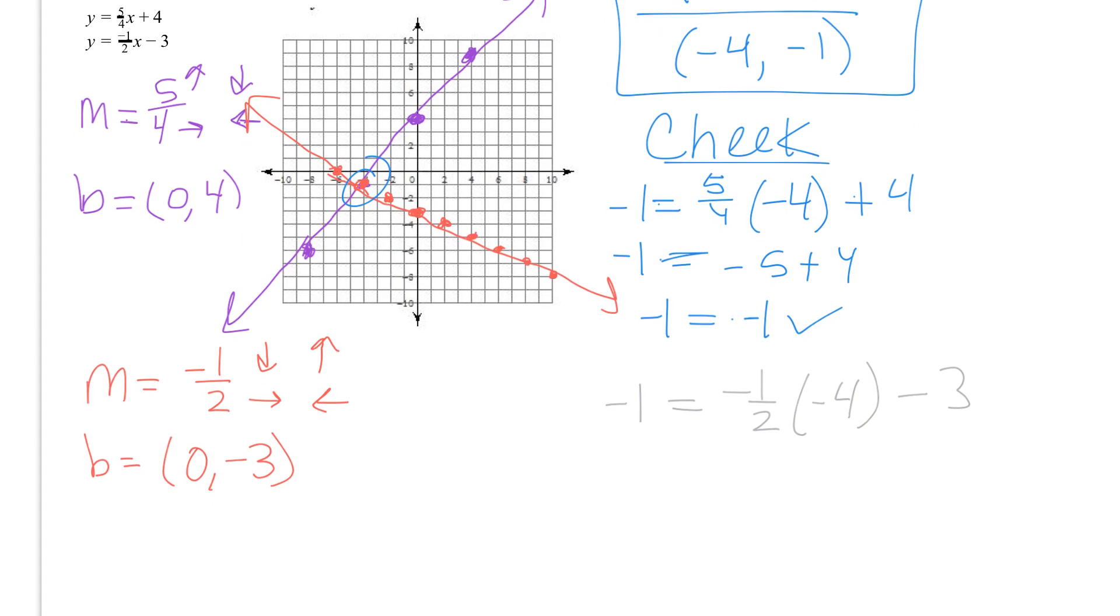Now again if you want to save yourself some time, you could just plug this right hand side into your calculator to make sure you get negative 1. Or again if you want to do it by hand you can. Negative 1 half times negative 4 is going to give us 2. Minus 3. And 2 minus 3 is negative 1. So since they are the same, we know that it works for the second line.